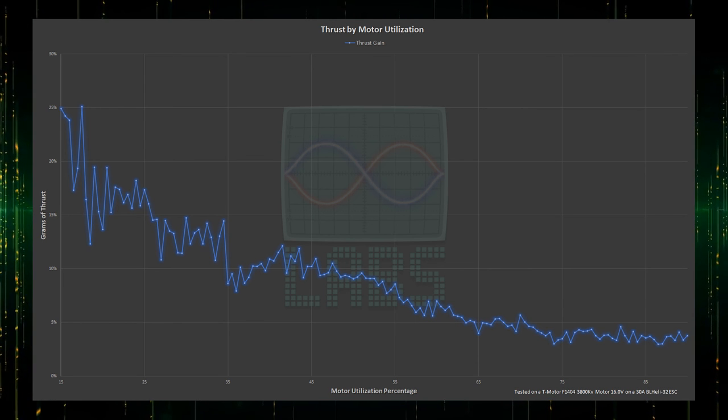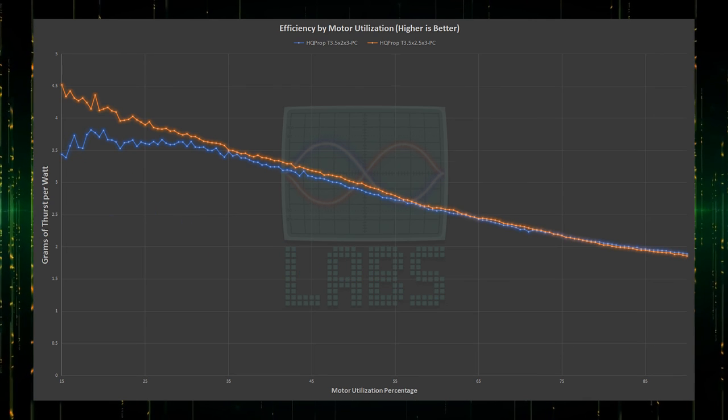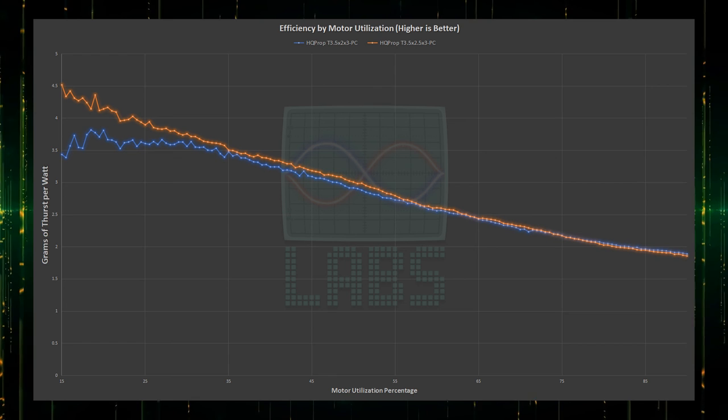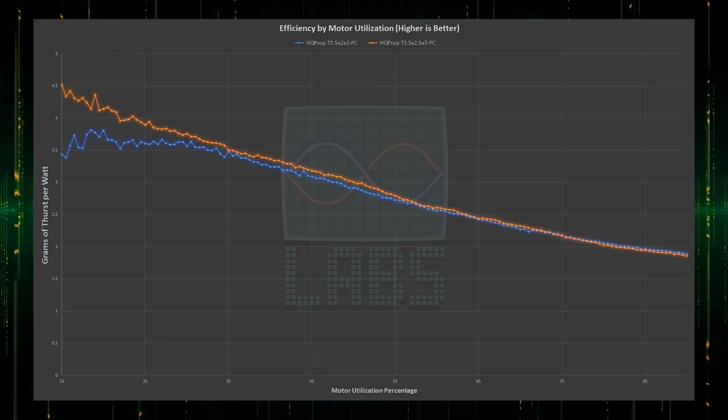Additional thrust is great, but what is the cost of that thrust on efficiency? Now this is very surprising. With a more aggressive prop that generates more thrust, you'd expect the efficiency to decrease, not increase.